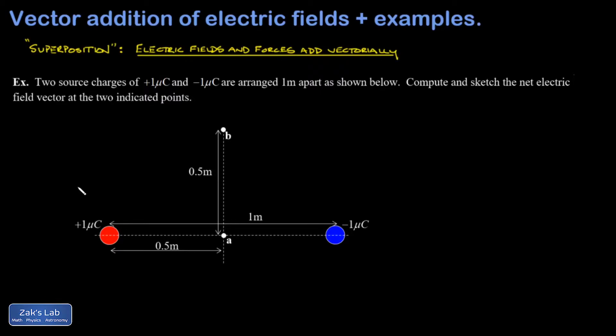So in our first example, we have two point charges plus one microcoulomb, minus one microcoulomb separated by a meter. And we're trying to compute the electric field vector at this point A, and this point B that's coming up vertically by a half meter off of that midpoint.